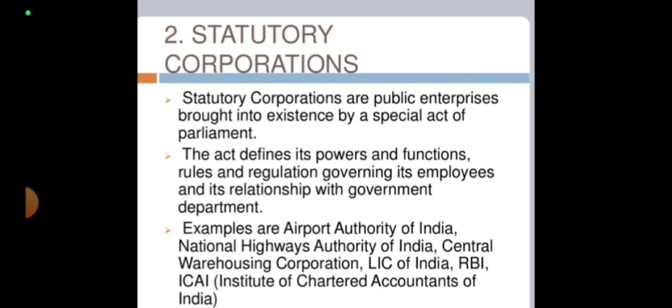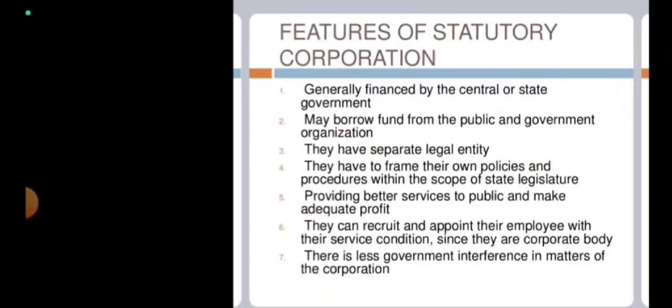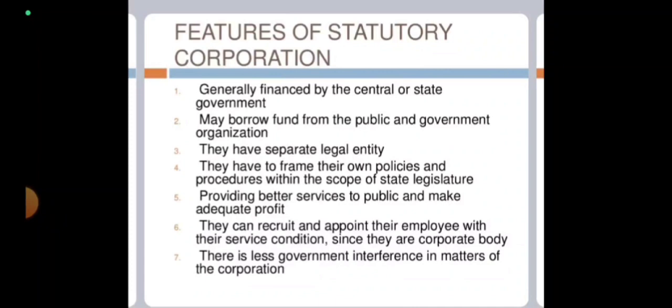The act contains all the limitations, rules, regulations, and functioning in itself. Few examples are: Airport Authority of India, National Highways Authority of India, Central Warehousing Corporation, LIC, RBI, ICICI, etc. These are all institutions established by passing an act. Now, what are the features of such organizations? First, they are generally financed by the central or state government.